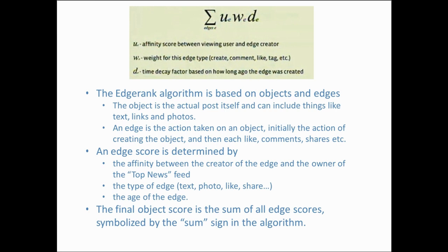So let's dig into this algorithm. The EdgeRank algorithm is based on objects and edges. An object is simply the name for a type of post — for instance, a post can contain a simple text message, a link, a photo, a video, or something like that. An edge is made up of affinity, the weight of an action, and time decay. The value of each parameter is based on a scoring system. The total value of an edge is a product of the affinity score, the weight score, and the time decay score. The total value of an object is the sum of all its edges — that's the reason for the summation sign in the EdgeRank algorithm.